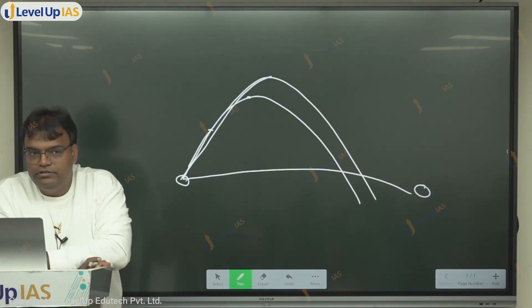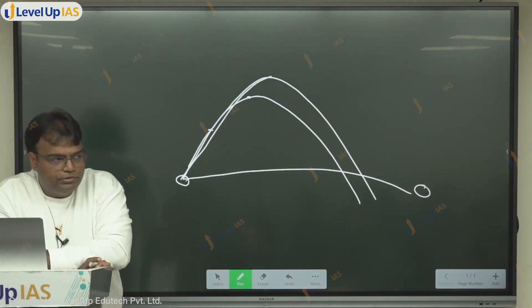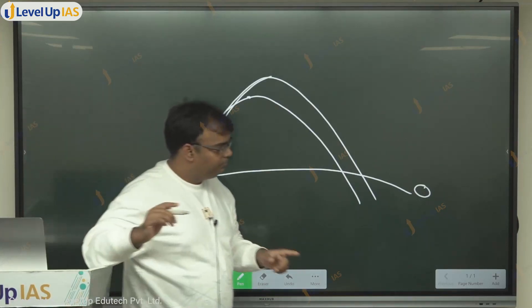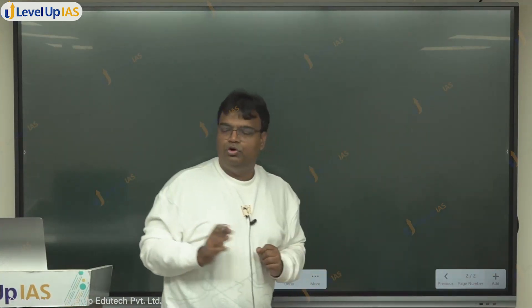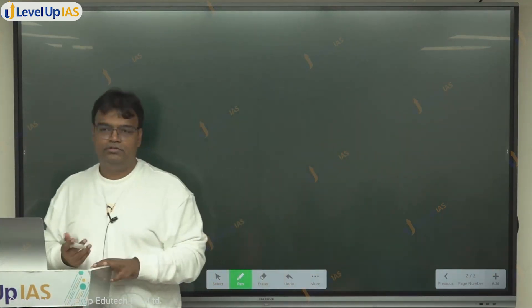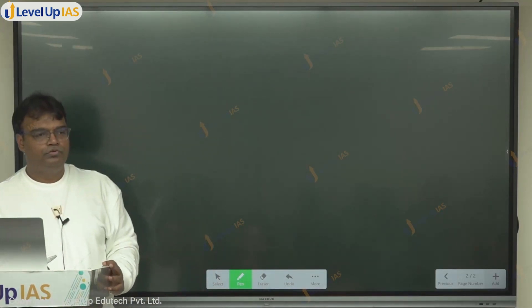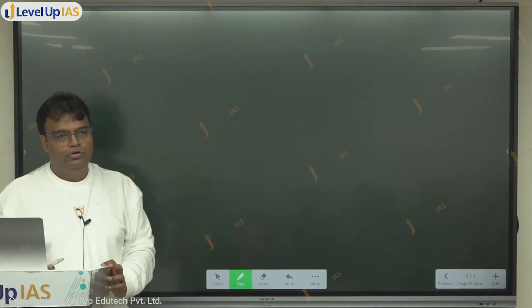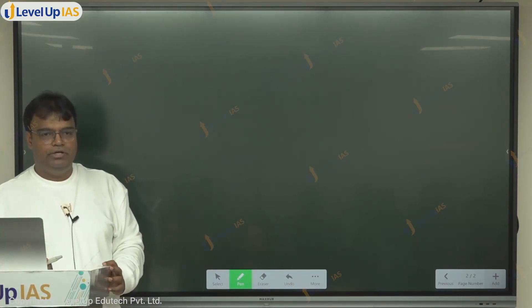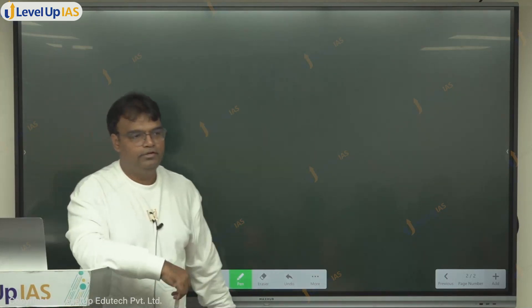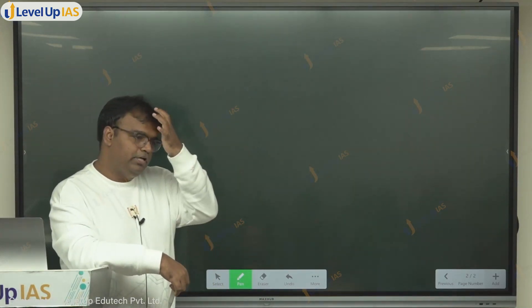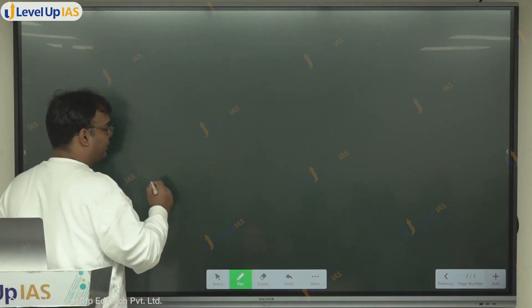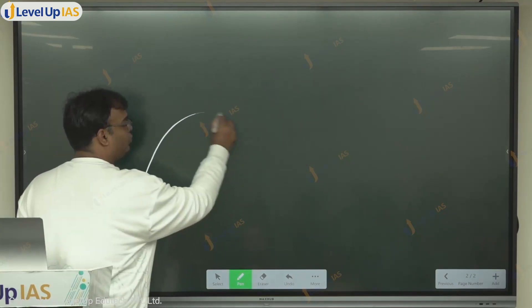Now let's come to understanding what a cruise missile is. A cruise missile does not follow the projectile motion system at all. In a cruise missile, it is controlled throughout the way. A ballistic missile generally goes in a high parabolic arc, but a cruise missile works differently.